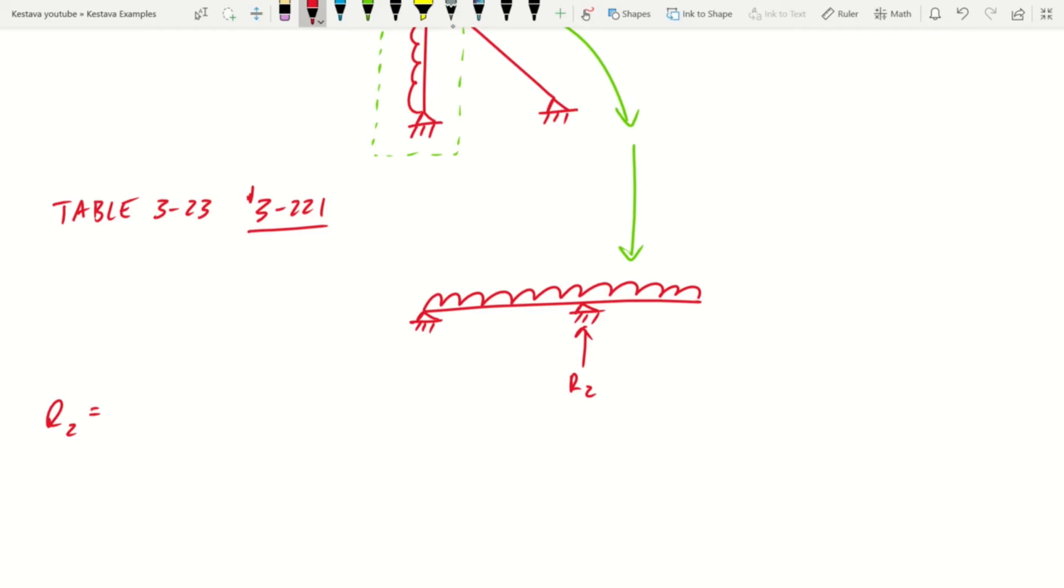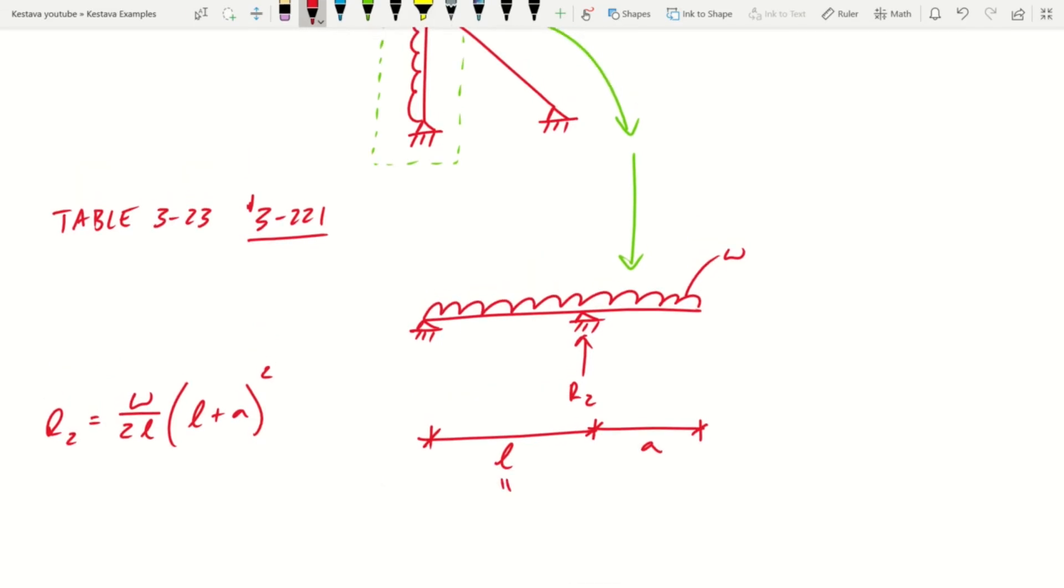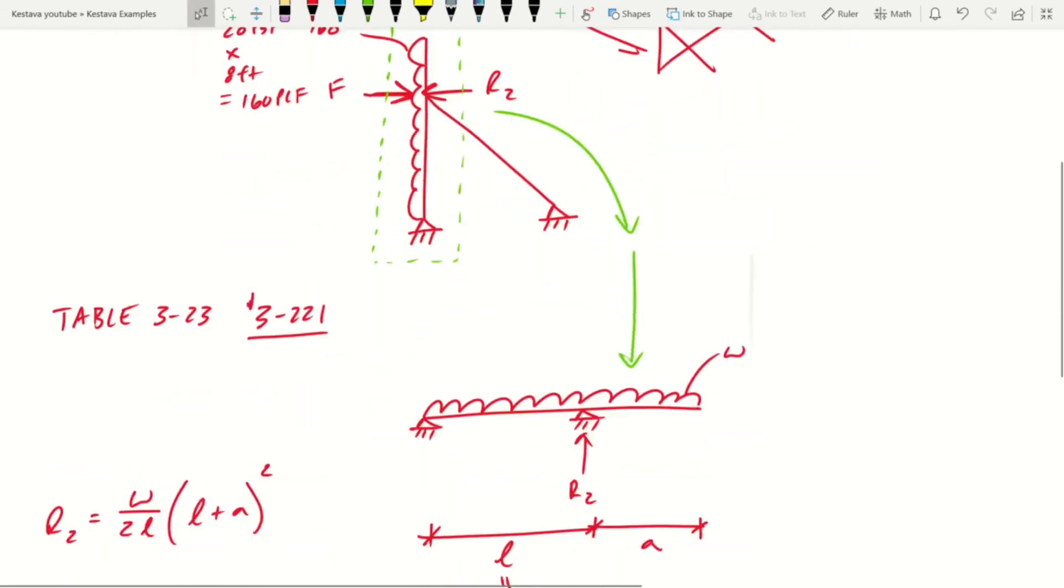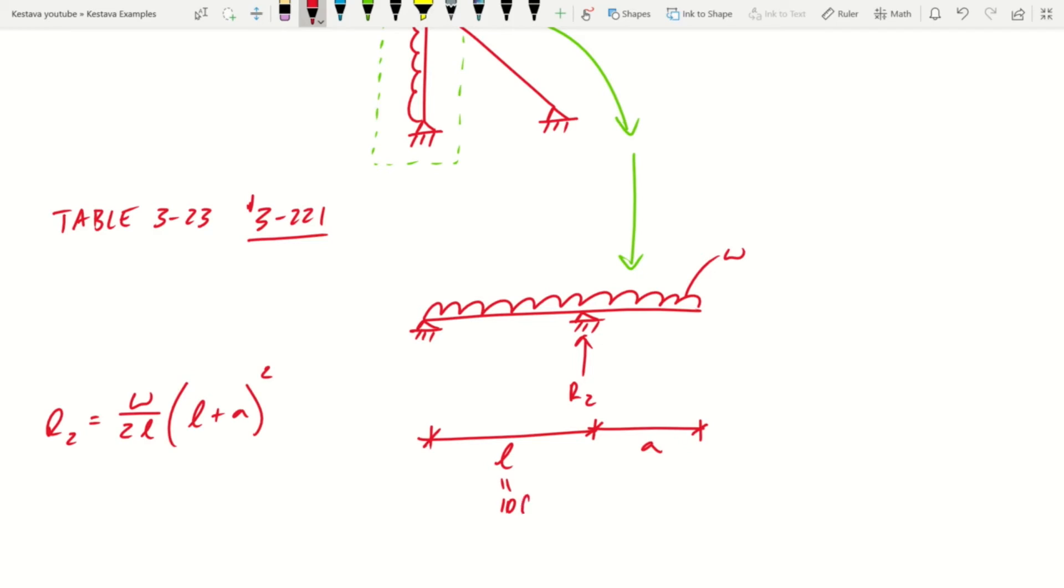It's something else. So that's why we need to stay true. And from the AISC manual, the equation is W over 2L times L plus A squared. This dimension is L, your cantilevered condition is A, that's W. We have all of our unknowns. Let me show you. So L is 10 feet, the total length is 16 feet, so that means A by default is six feet. W we know is 160 PLF.